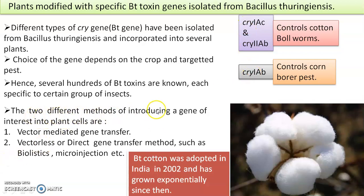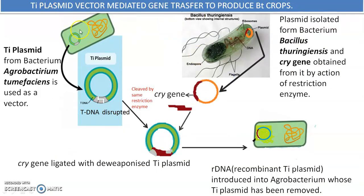There are two methods of introducing a gene into a plant cell to make a transgenic plant: vector-mediated methods and vectorless methods. Ti plasmids are very good vectors to deliver the gene of interest in plants. In the vectorless method, biolistics using a gene gun bombards genes onto plant cells. For Ti plasmid-mediated delivery, Agrobacterium tumefaciens is a natural genetic engineer. The Ti plasmid is isolated; the T-DNA region — the infective part — is manipulated so the disease-causing gene is disrupted.